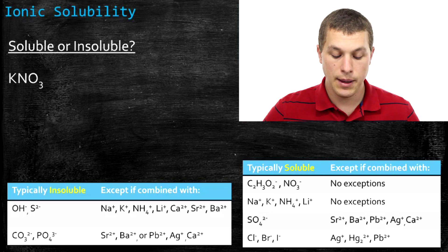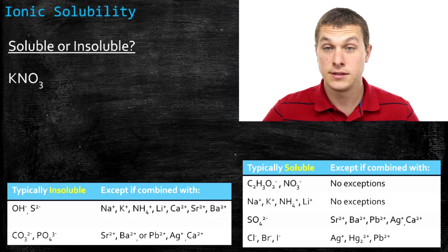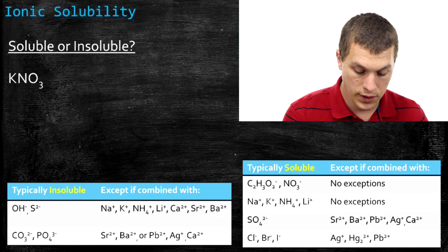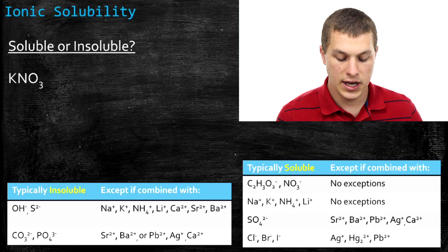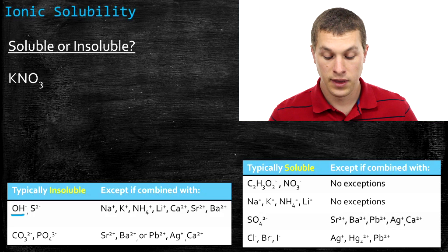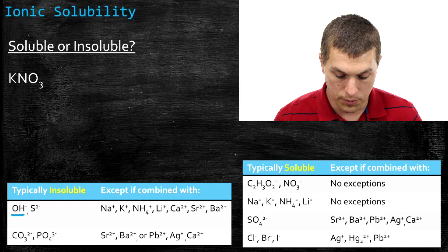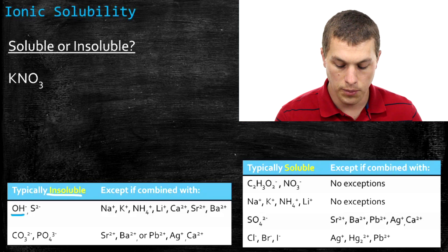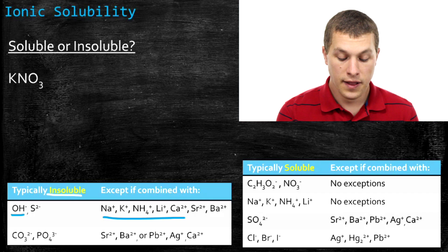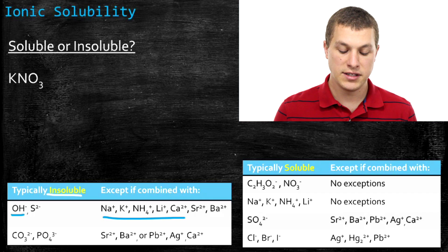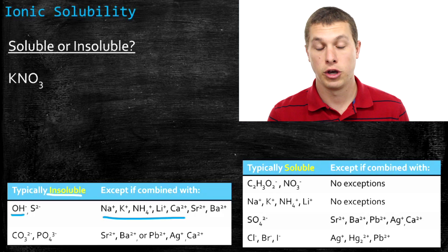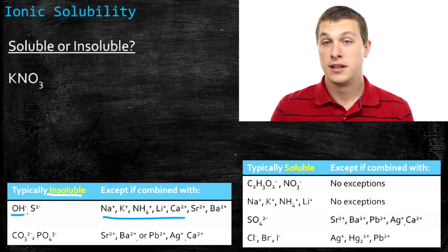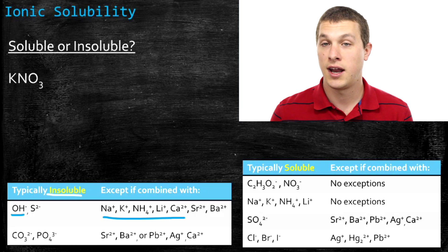You see here two tables. In one table, we list the ions that are typically insoluble — they don't dissolve. In the other table, we list the ions that are typically soluble — they do dissolve. For example, if I look at a compound and it contains hydroxide (OH⁻), it's typically insoluble because it's in the insoluble column. However, if it's paired with any of the exception ions — sodium, potassium, or ammonium — then it would actually be soluble. That's how these tables work. It takes a few practice tries to get a hang of it, but once you do, you'll find it's pretty straightforward.